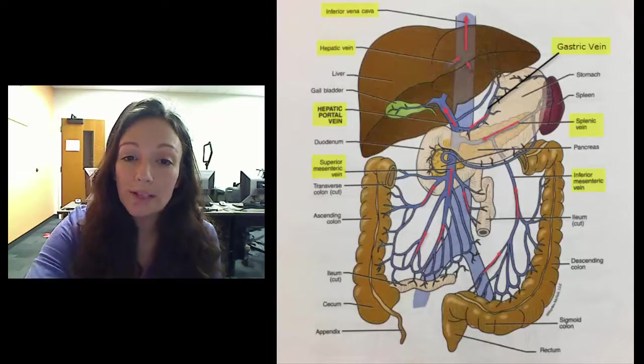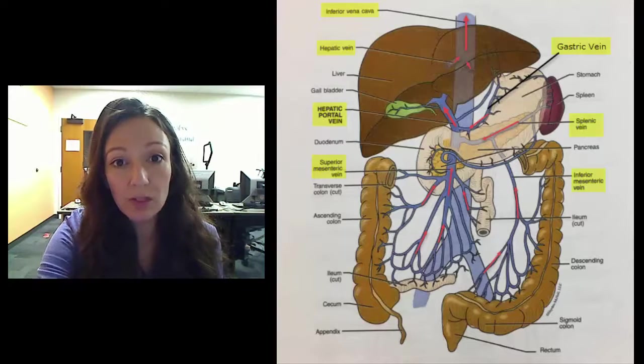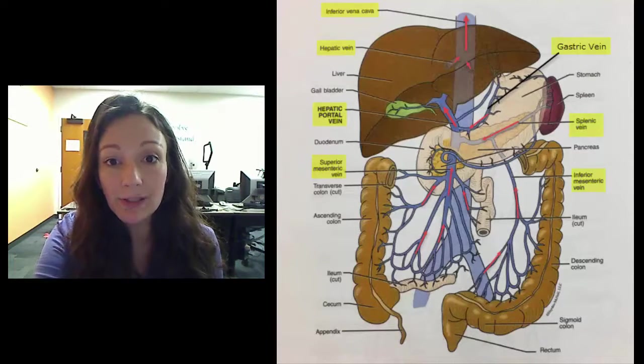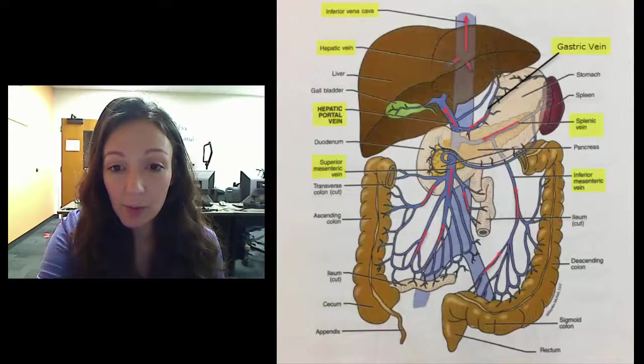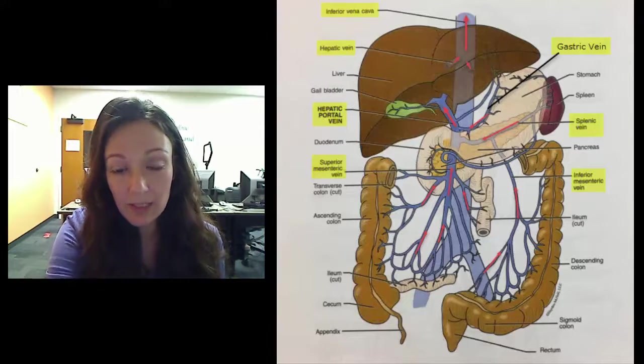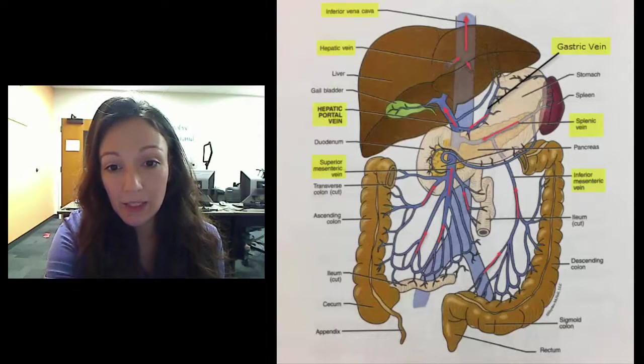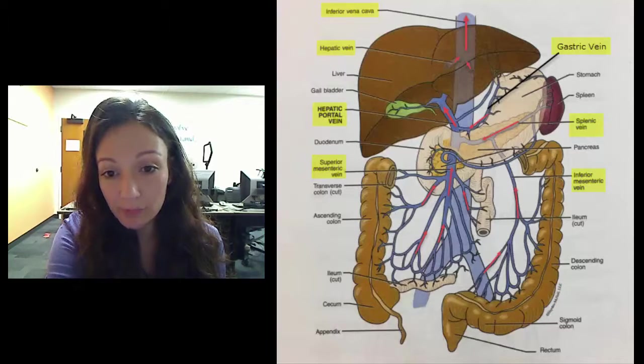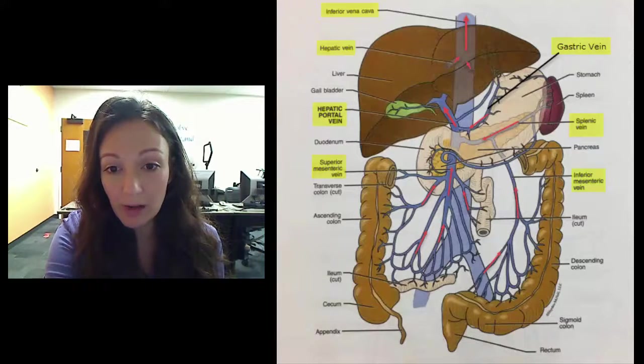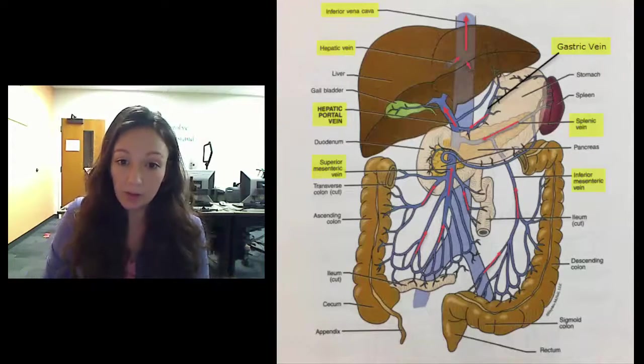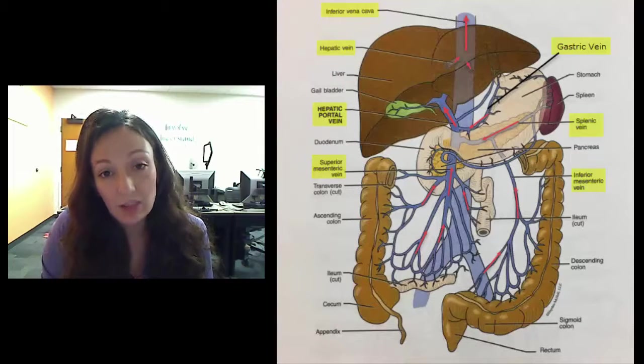So once that blood travels through the capillaries of the liver, it's then going to come out on the posterior side of the liver, if you can see back there, the hepatic vein. And there's actually two of them. And so this blood will drain out from the liver through those hepatic veins into the IVC now.